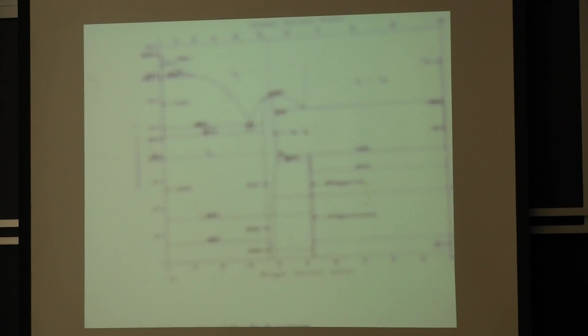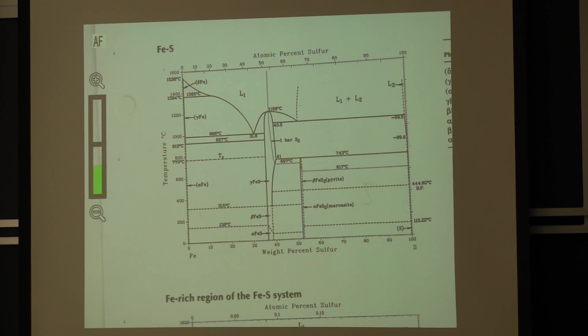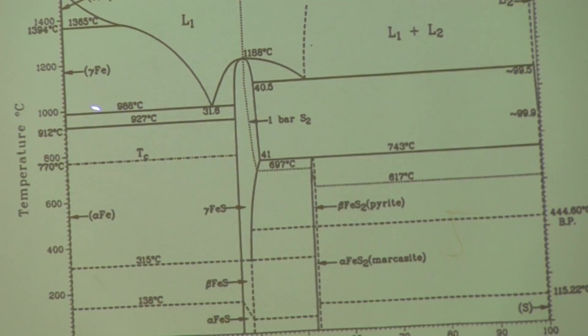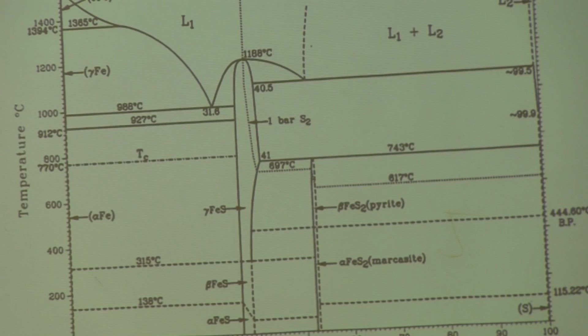This is the iron-sulfur system and you can see there's a very deep eutectic just like the iron-carbon system, except it goes down to 988°C. So steel melts at 1538, you get a little sulfur liquid in your iron, or get some sulfur in the liquid iron, and you will have liquid iron sulfide unless you throw some manganese in.